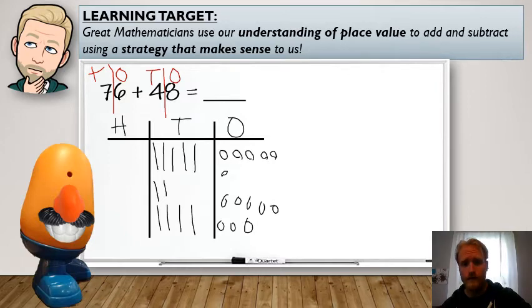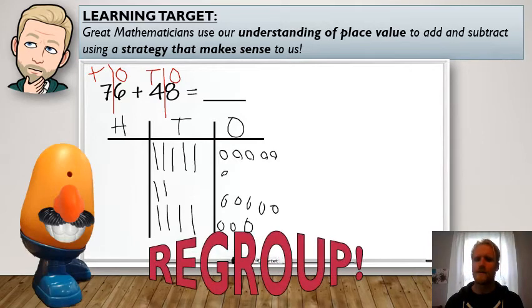One, two, three, four, five, six, seven, eight, nine, 10, 11, 12, 13, 14. I have 14 ones. So what do I have to do if I have 14 ones? Yeah, exactly. We've got to regroup.